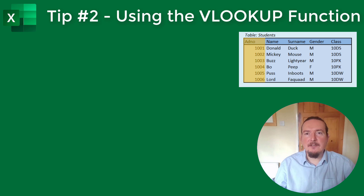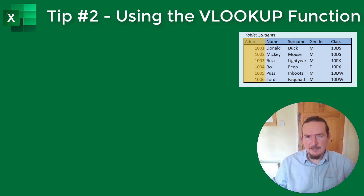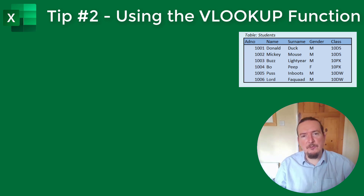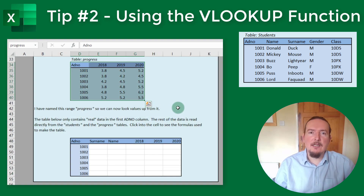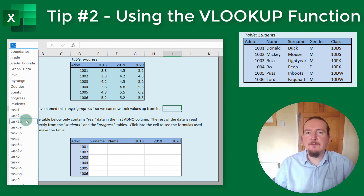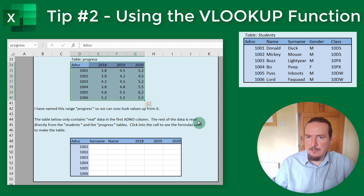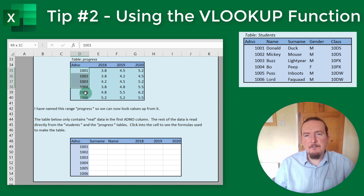ADNO is a unique student identifier used in our school. Most reports and data sheets that the school creates on students will usually include this code somewhere, and usually it's at the front of the data sheet. This is extremely useful as it means you can merge data from one or more of these various reports into your own gradebook using the VLOOKUP function, as long as you also include this same unique identifier in your own gradebook. This second table I've already named PROGRESS. So now I have two named ranges, STUDENTS and PROGRESS, and both tables have the ADNO included as their first column.